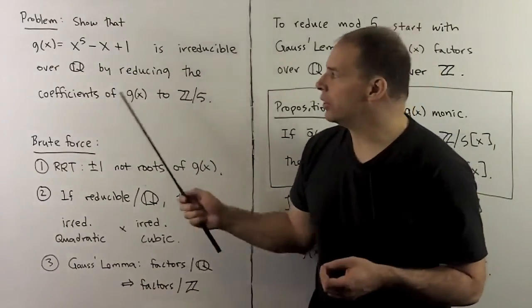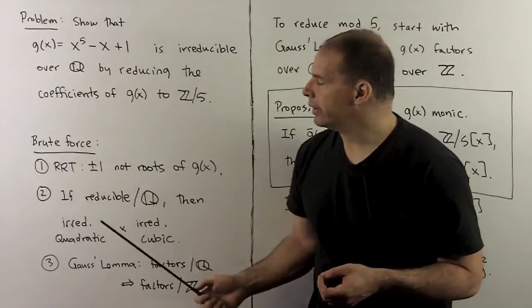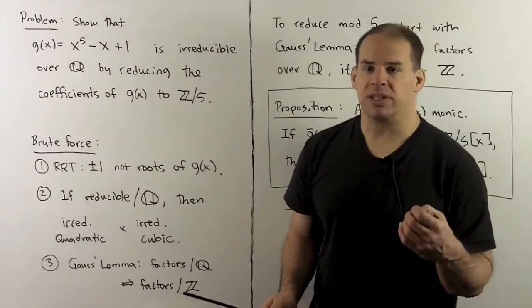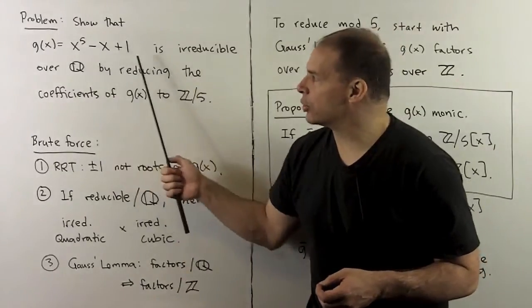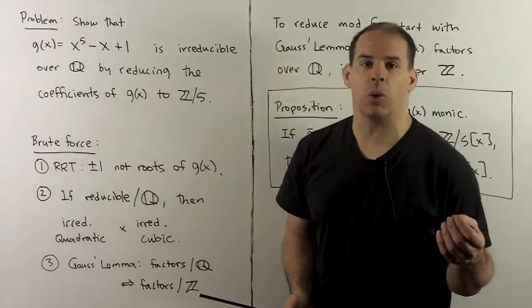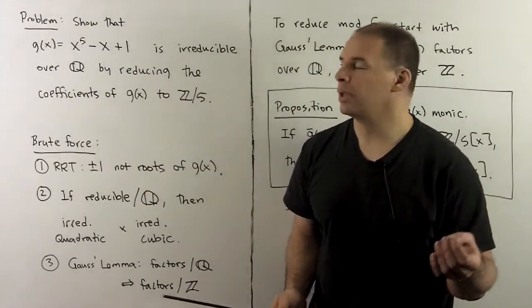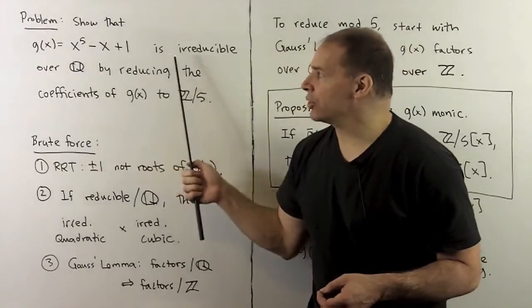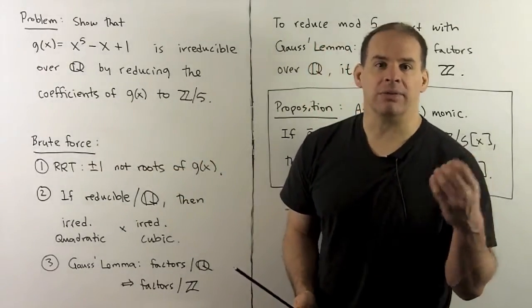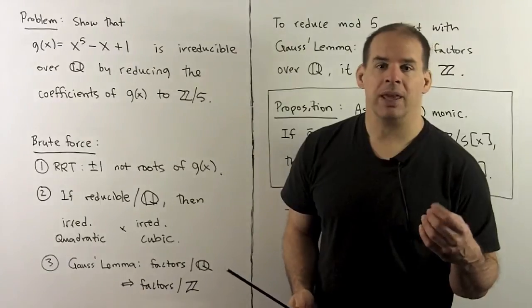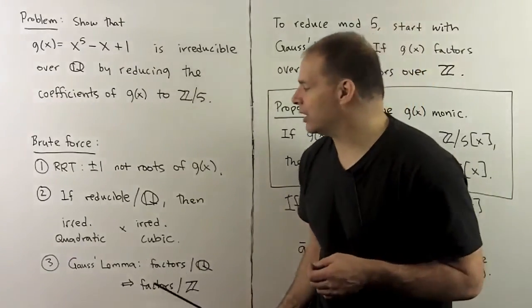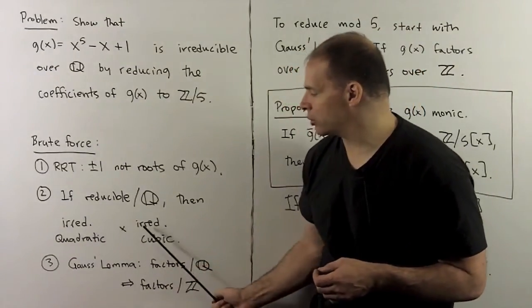We can show this using brute force. By the rational roots test, the only possible rational roots of our polynomial are plus or minus one, and they're not roots. So if this factored over the rationals, there can't be a linear factor over the rationals.